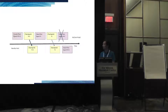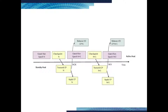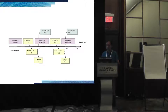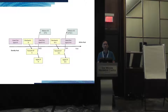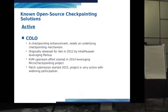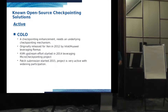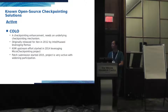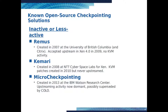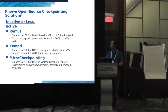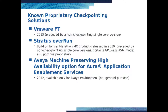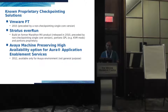In case of a failure, the standby side will take over using the last checkpoint. For each checkpoint, it will hold the IOs for correctness, transfer the states to the standby side and get an acknowledgment, and then release the IOs. There are a few known open-source checkpointing solutions: the aforementioned Colo is the only one that's active now. There's also Remus, Kamari, and Michael Checkpointing, which are not active anymore. And there are also some proprietary checkpointing solutions: VMware FT, the Stratus Avance Software, and Avia Solutions.